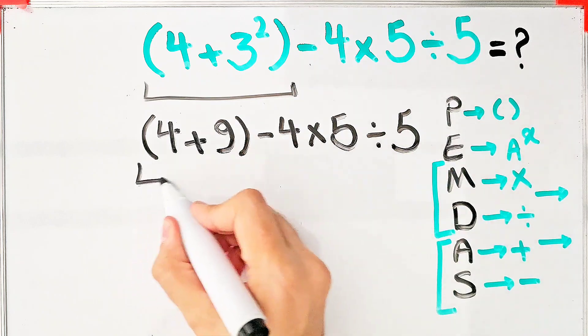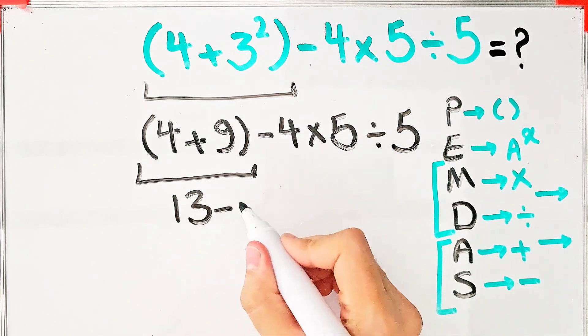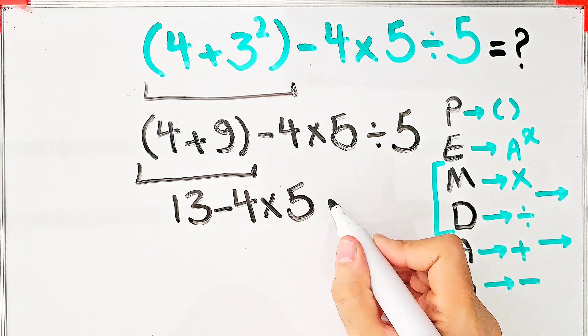Again, we simplify the parentheses. 4 plus 9 equals 13. 13 minus 4 times 5 then divided by 5.